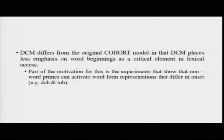The DCM differs from the original cohort model in that it places less emphasis on word beginnings as a critical element in lexical access. The original cohort model heavily depended on activation from a particular onset, but later studies found that word middles and word endings also play an important role. In the DCM, the emphasis on onset is slightly reduced and distributed more evenly across onset, middle, and offset. Some experiments show that non-word primes can activate word form representations that differ in onset.